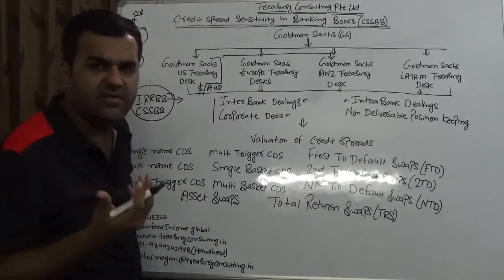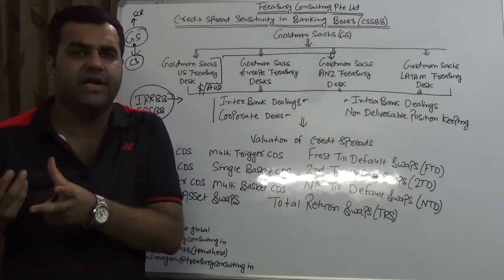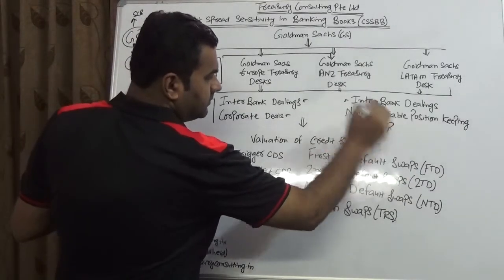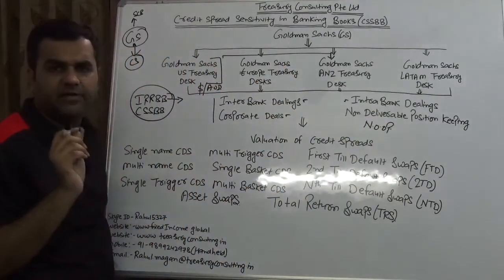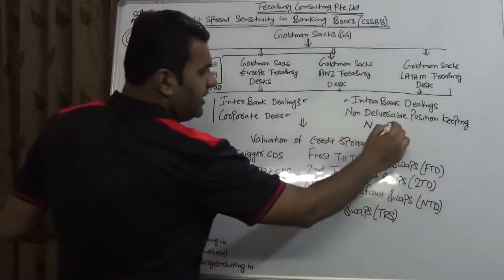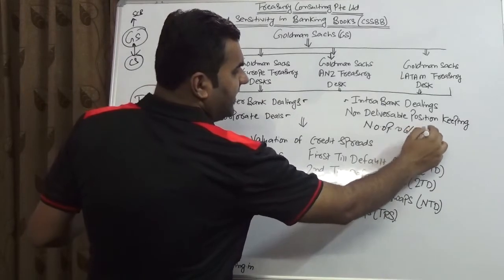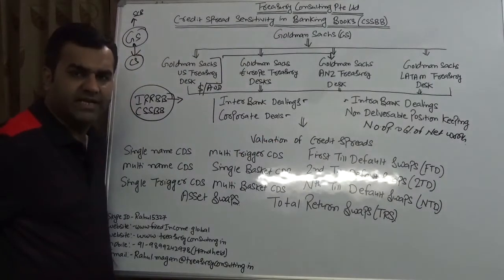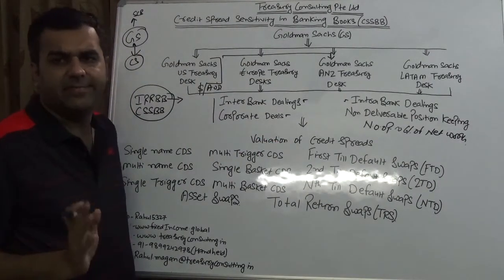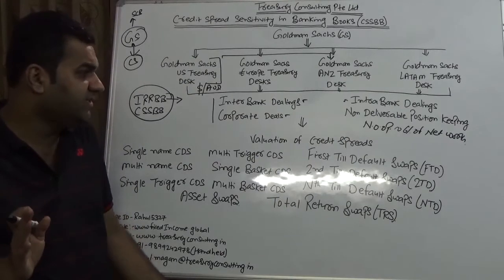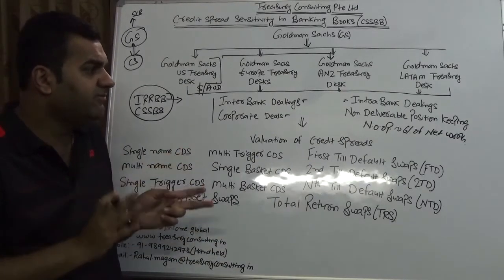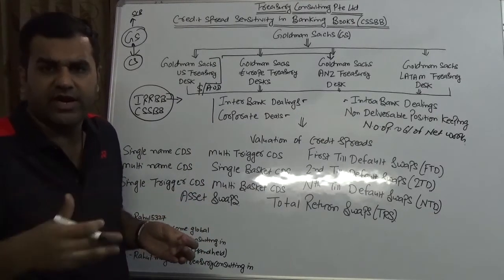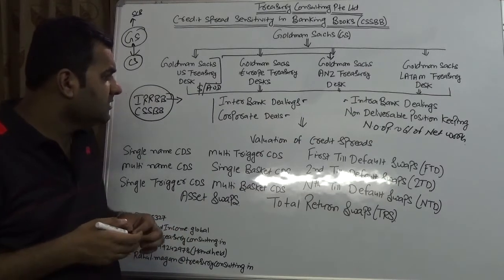Now this generates one report which every bank gives to the local regulator at the end of the day. In India, this report is known as NOOP - Net Overnight Open Position - which sitting today is approximately 6% of net worth of the bank. So whatever is the net worth of Goldman Sachs India, Goldman Sachs India can maintain 6% of that basically in their non-deliverable position keeping, in their net overnight open position.